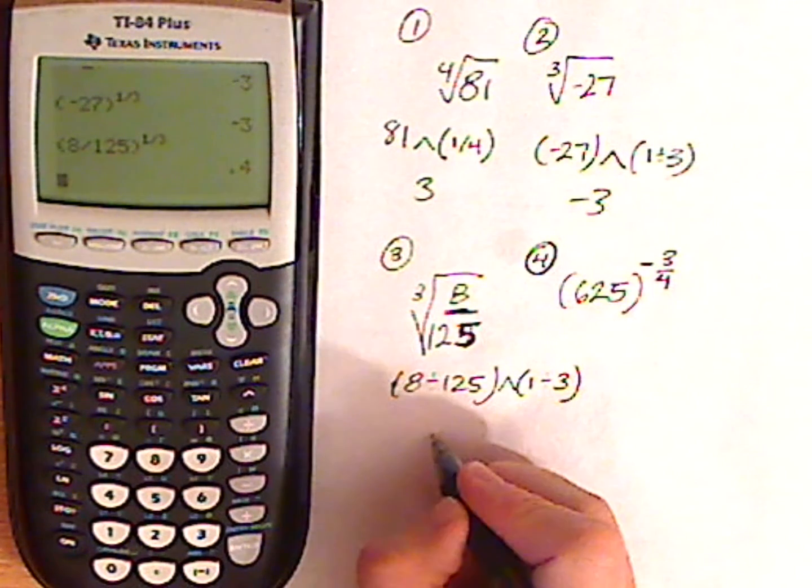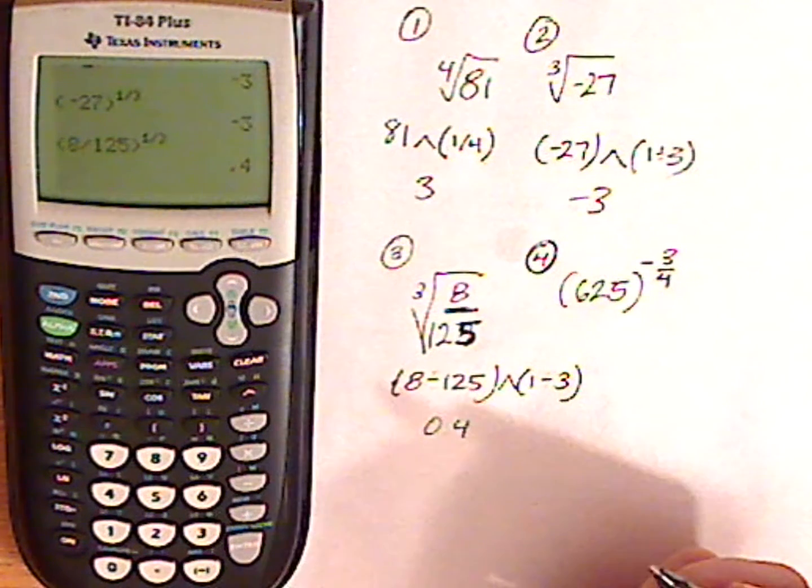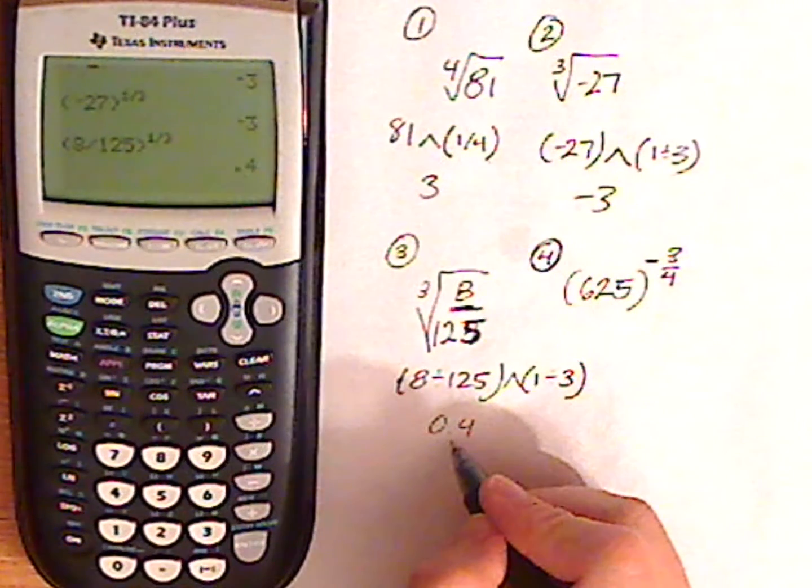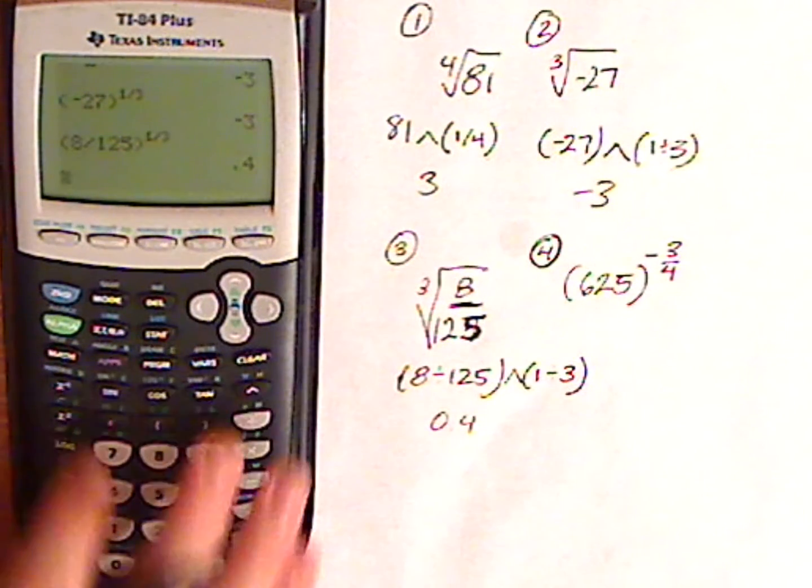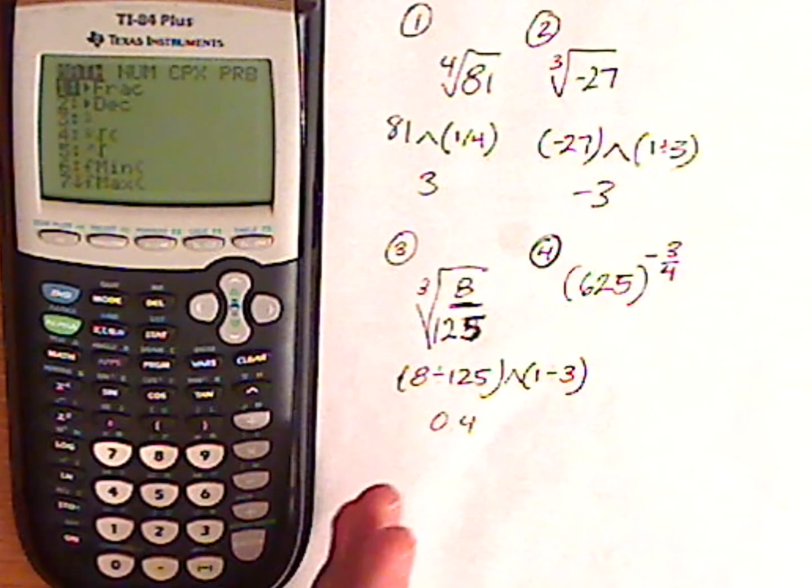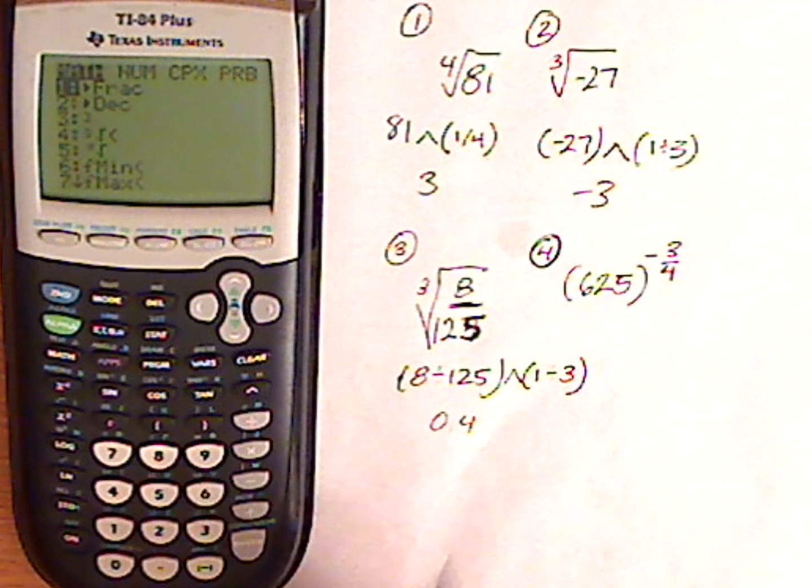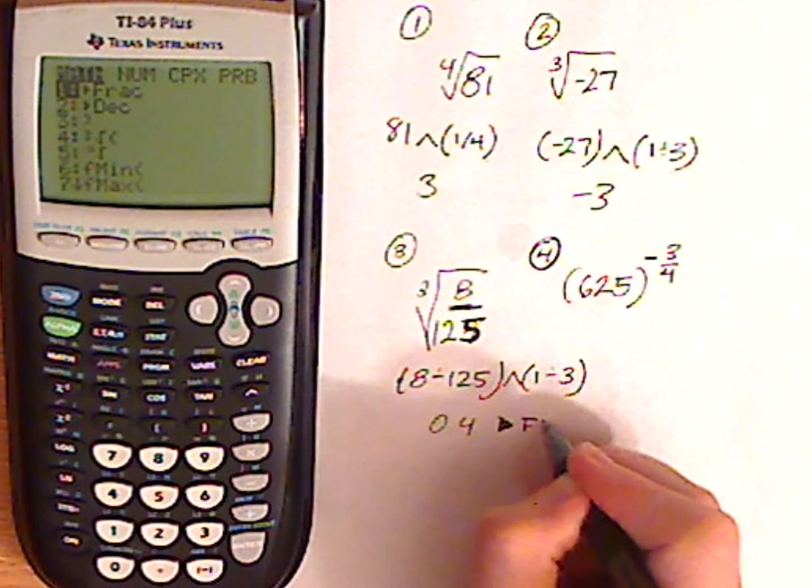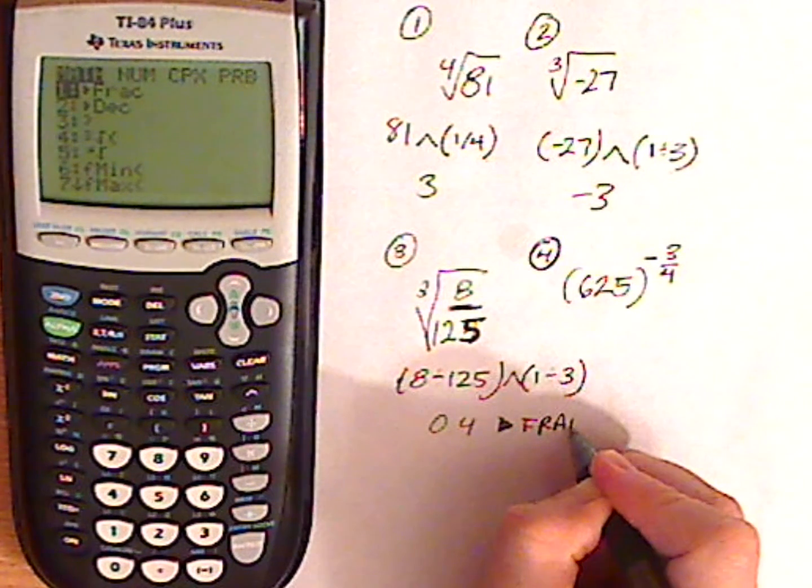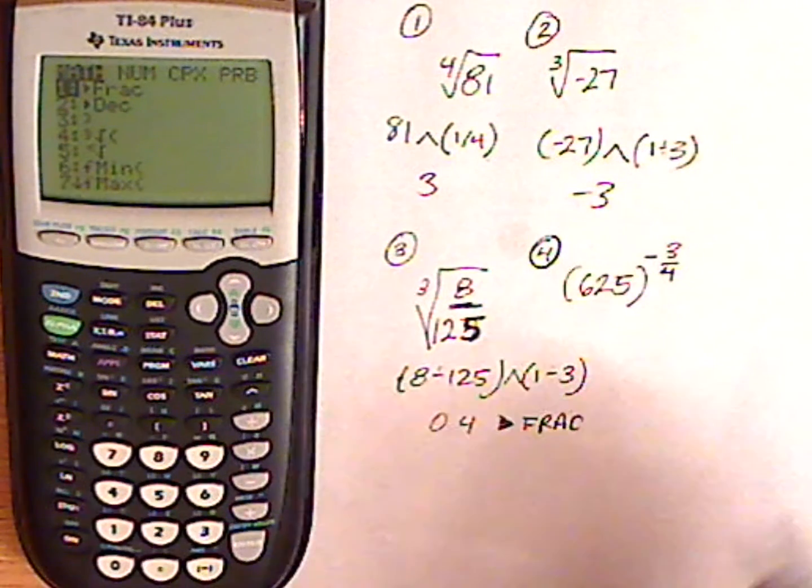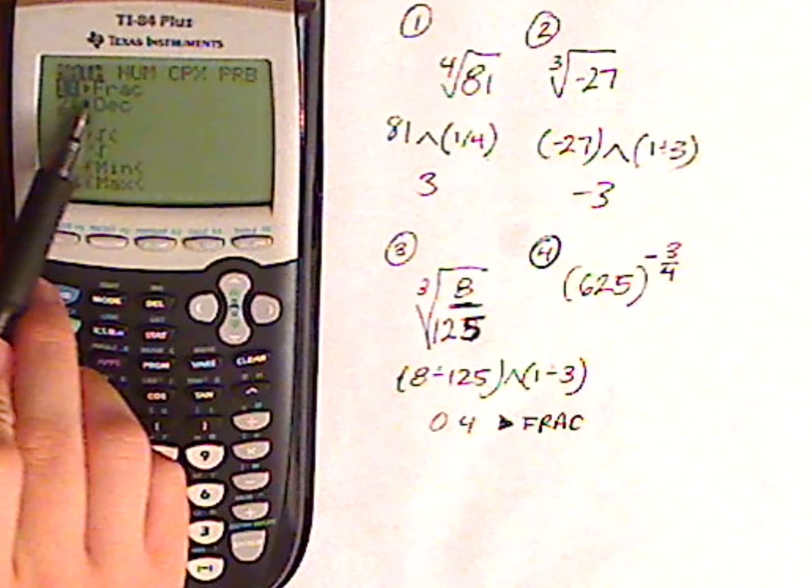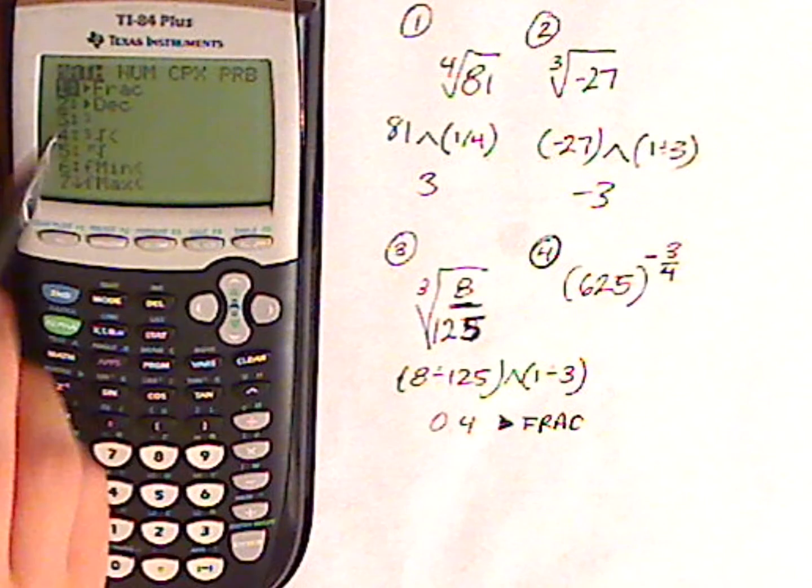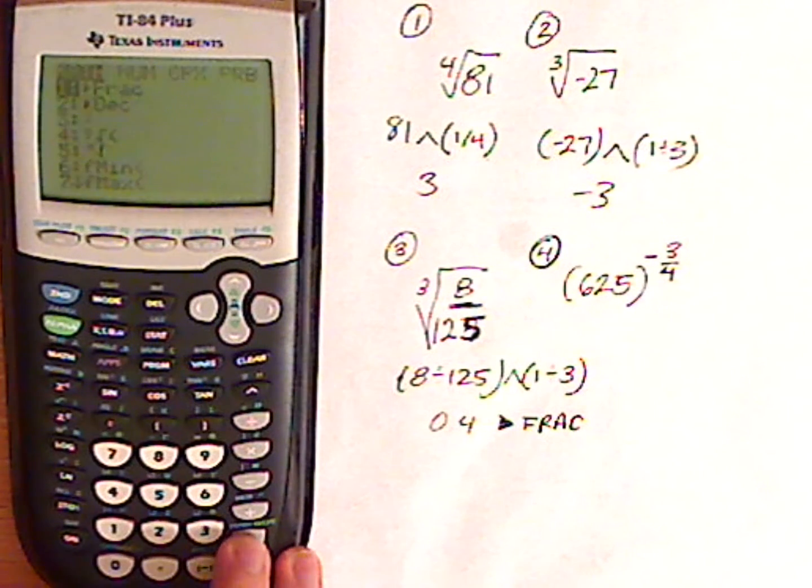And I ended up getting 0.4. Now to change this from a decimal to a fraction, use the Math button. Now see the little arrow? That's going to convert it. And you want to push Fract. So Fract. This converts it to a decimal. So convert to Fract.